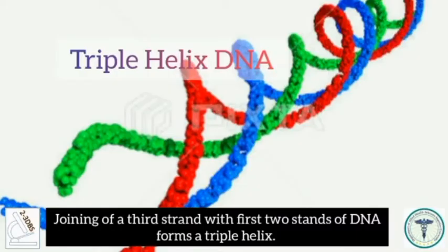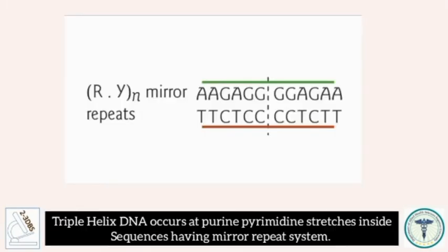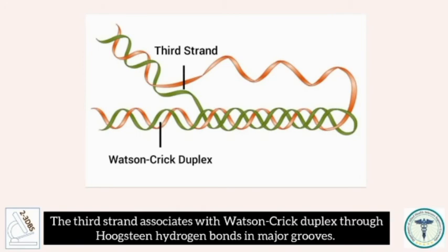Triple helix DNA: joining of a third strand with the first two strands of DNA forms a triple helix. Triple helix DNA occurs at purine-pyrimidine stretches inside sequences having a mirror repeating system. The third strand associates with the Watson-Crick duplex through Hoogsteen hydrogen bonds in major grooves.